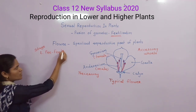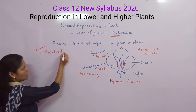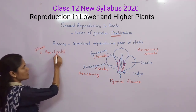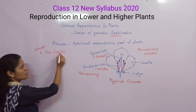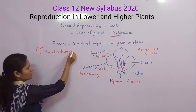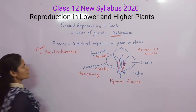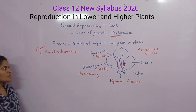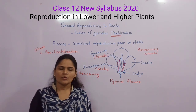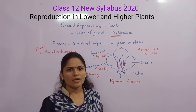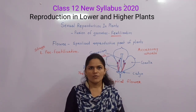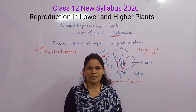The second stage is fertilization, and the third stage is post-fertilization. The first stage, the pre-fertilization process, includes two main developments: development of the male gametophyte and development of the female gametophyte.